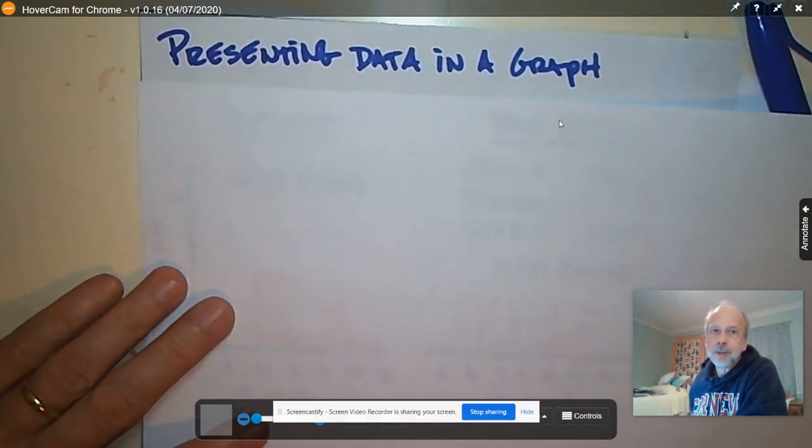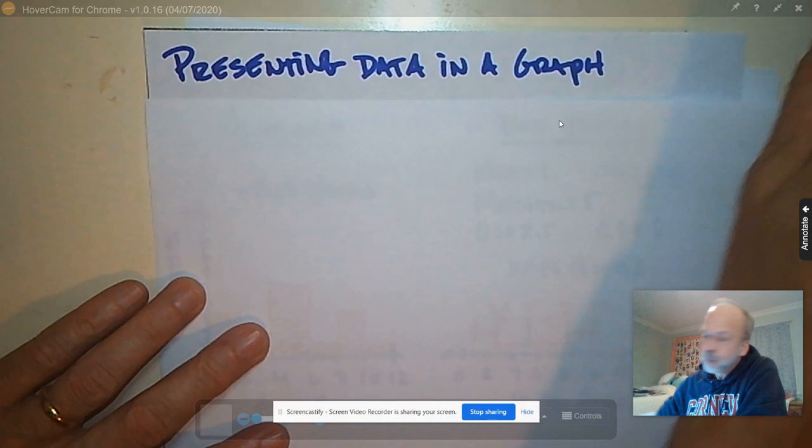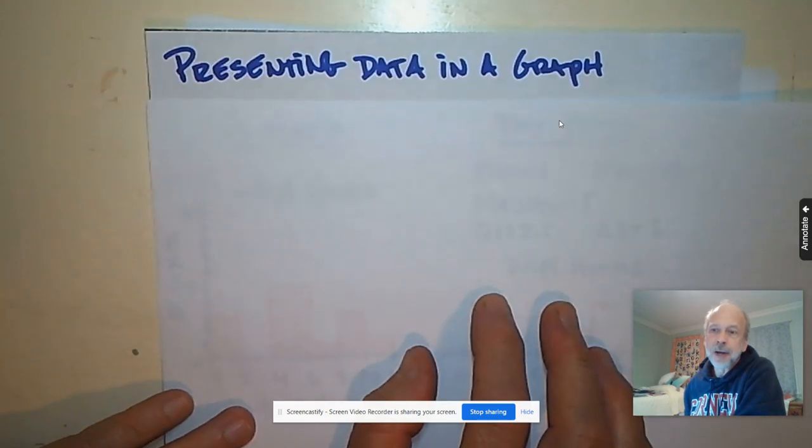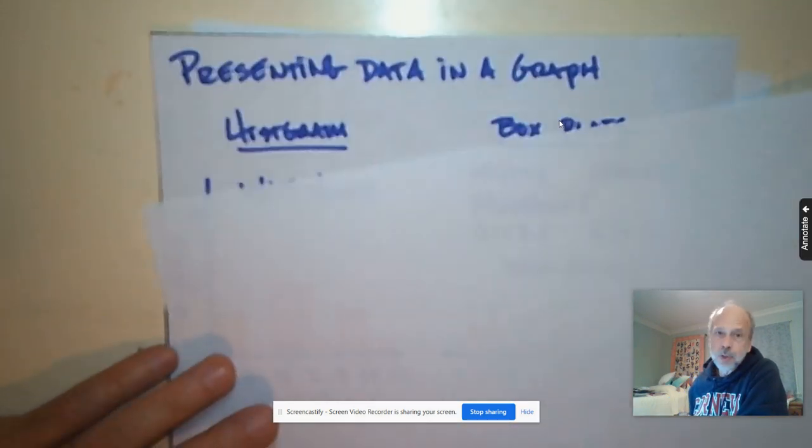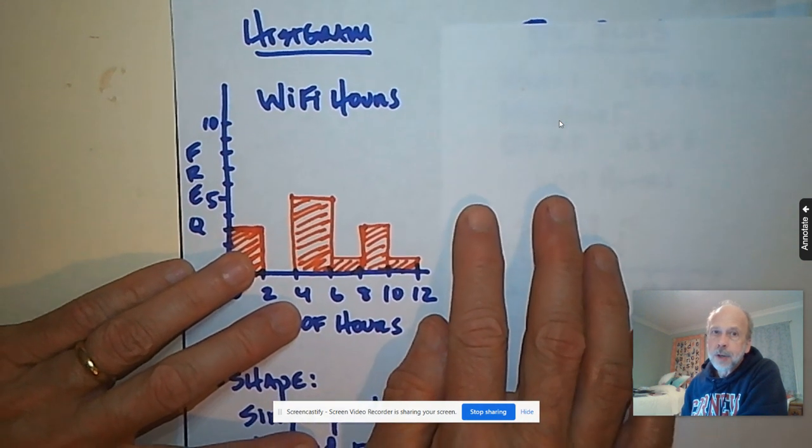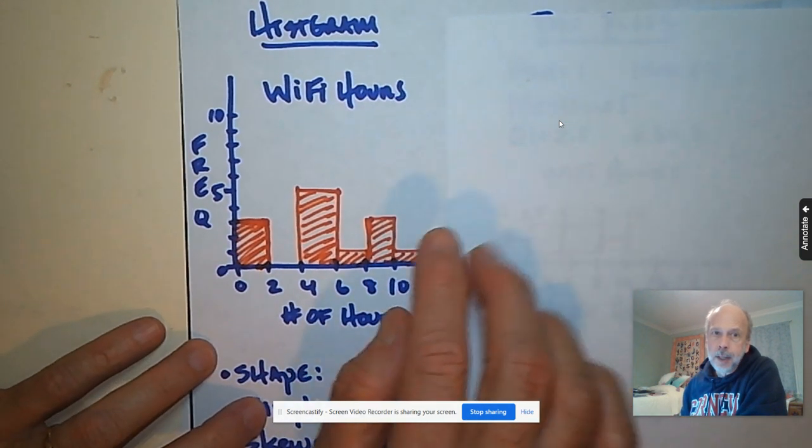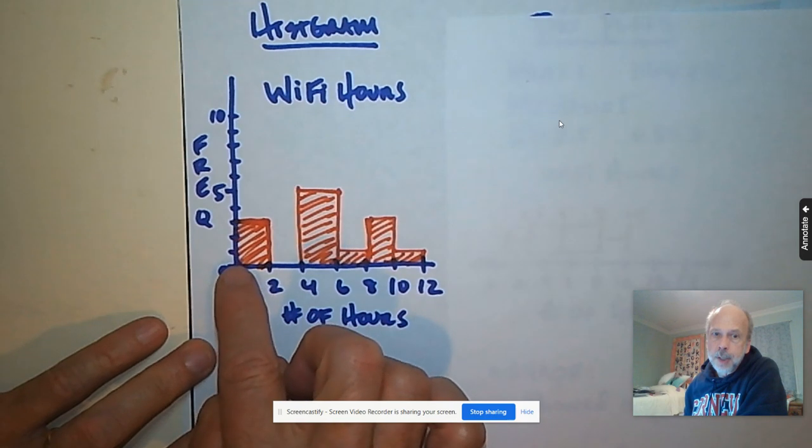So our last bit of work is to figure out how we will present our data in a graph. And here we have two choices. We can use our histogram and start by drawing an L shape.